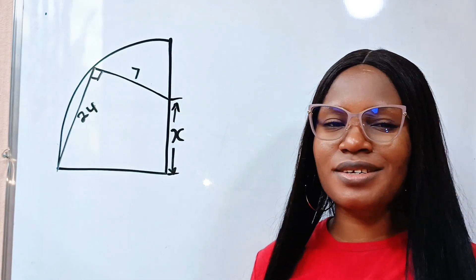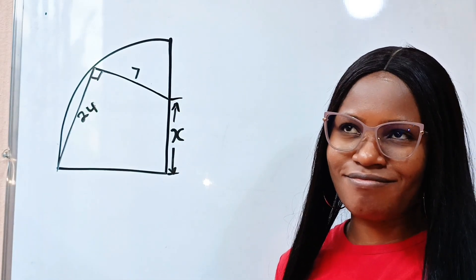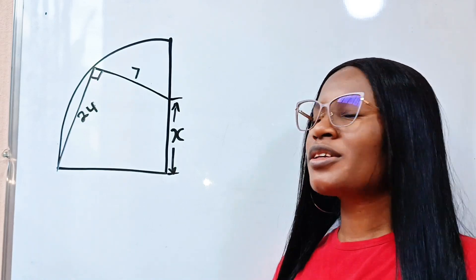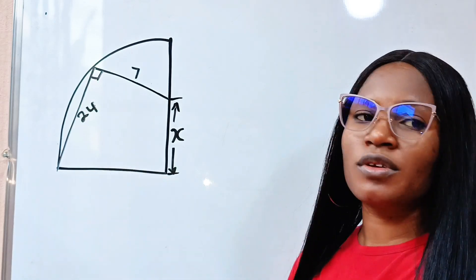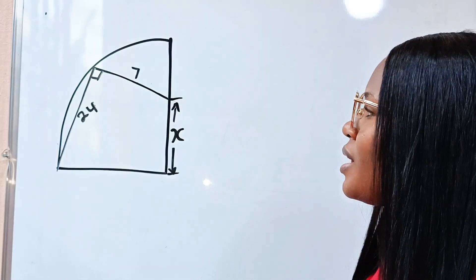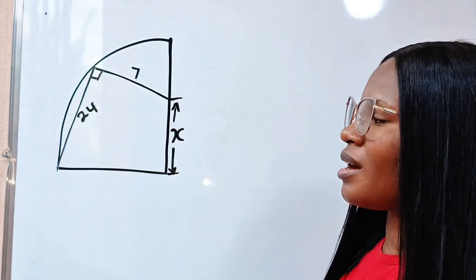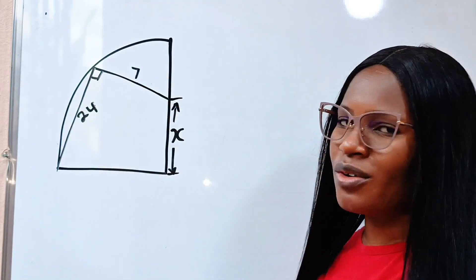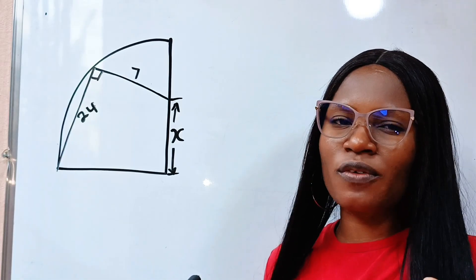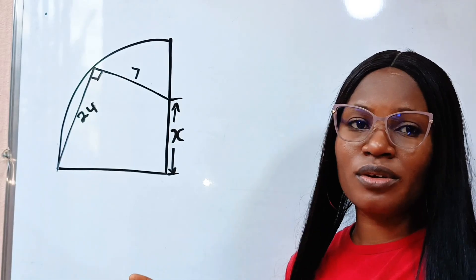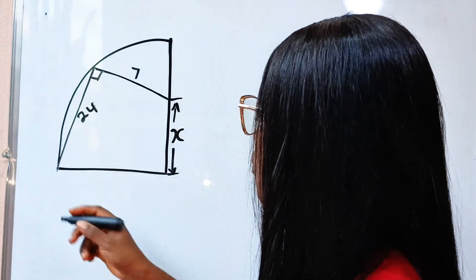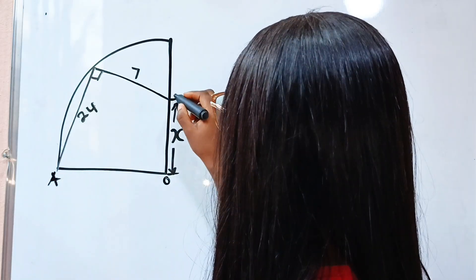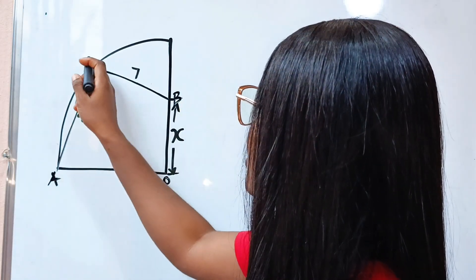We are asked to find the value of x. We are going to make use of whatever is given to us. We have 90 degrees here, and the two sides of the triangle are given, so we can use the Pythagorean theorem. Let's call this point A, this is O, this is B, and this is C.